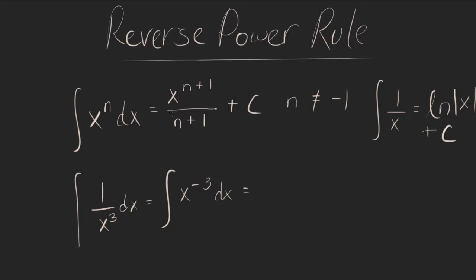So we have x to the negative 3 dx. Using our reverse power rule, our answer would start to look like x to the n plus 1, n in this case equals negative 3. So we have negative 3 plus the 1, 1 over negative 3 plus the 1 again, which simplifies to x to the negative 2 over negative 2 plus c. And that's our final answer.